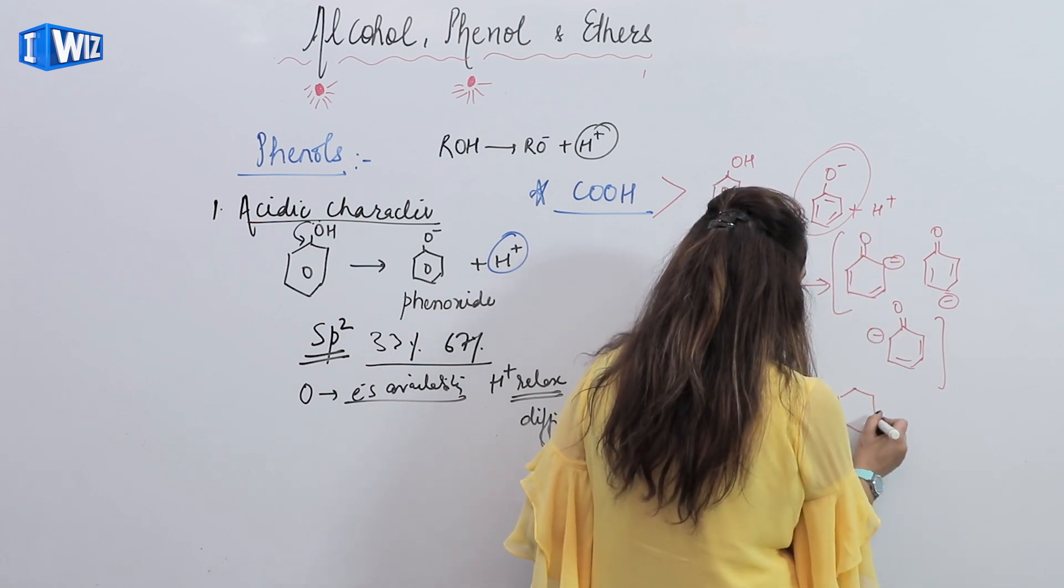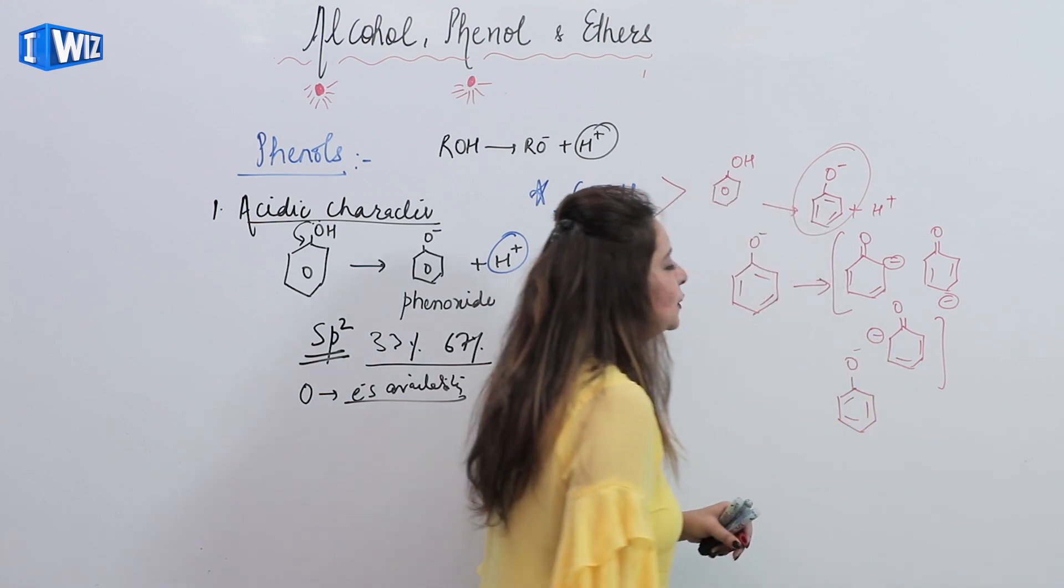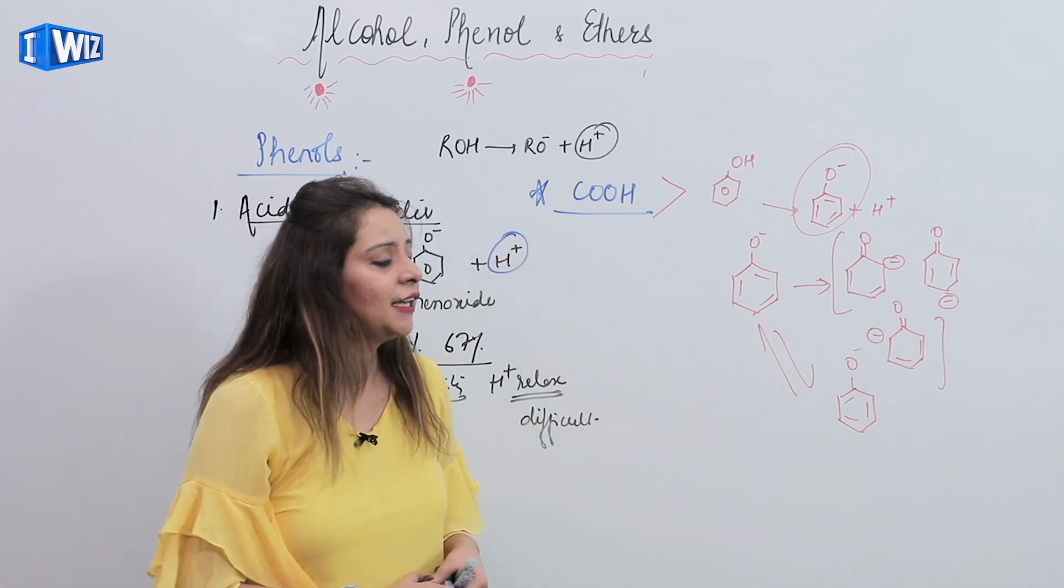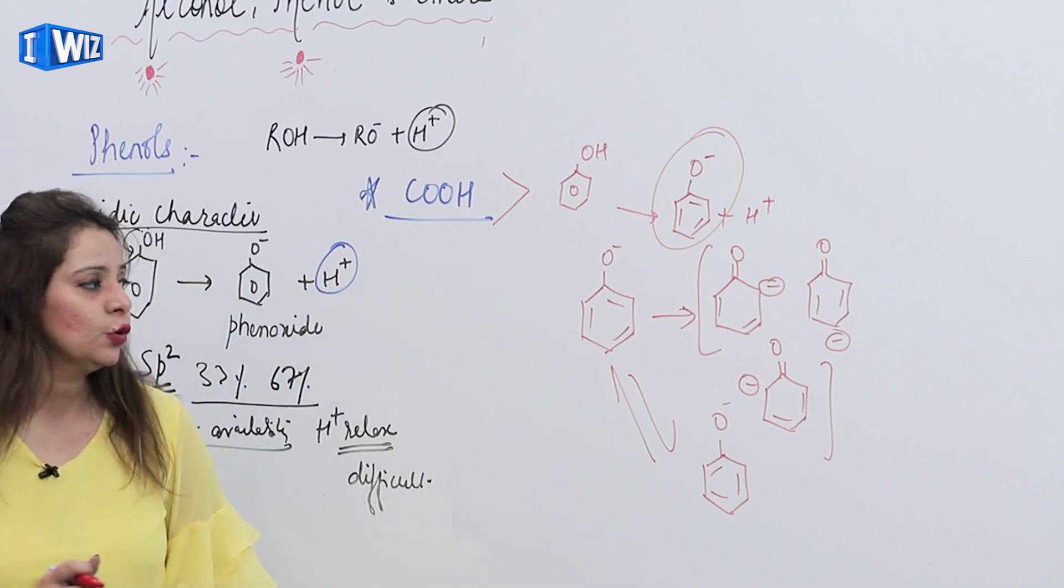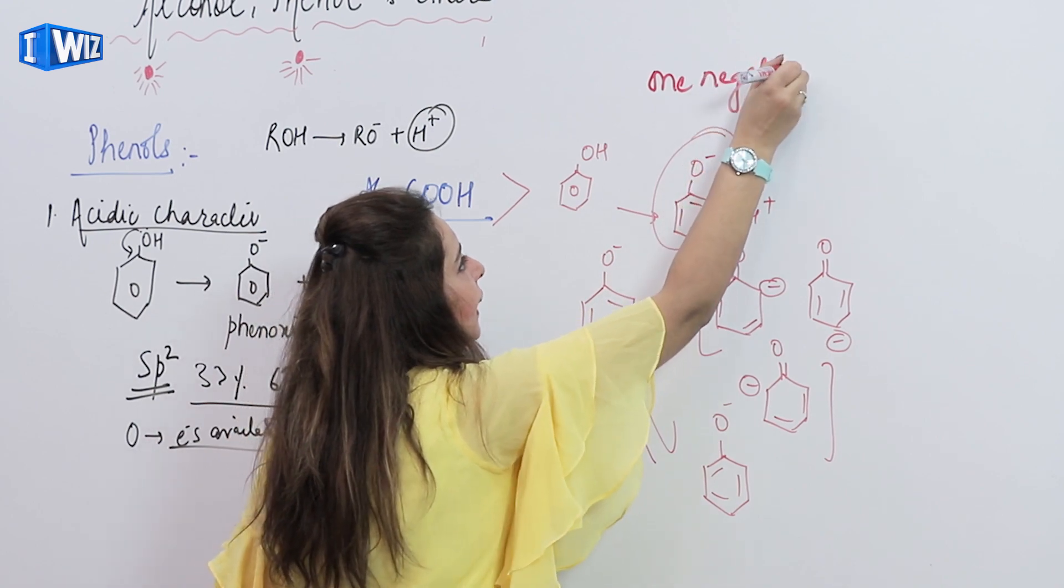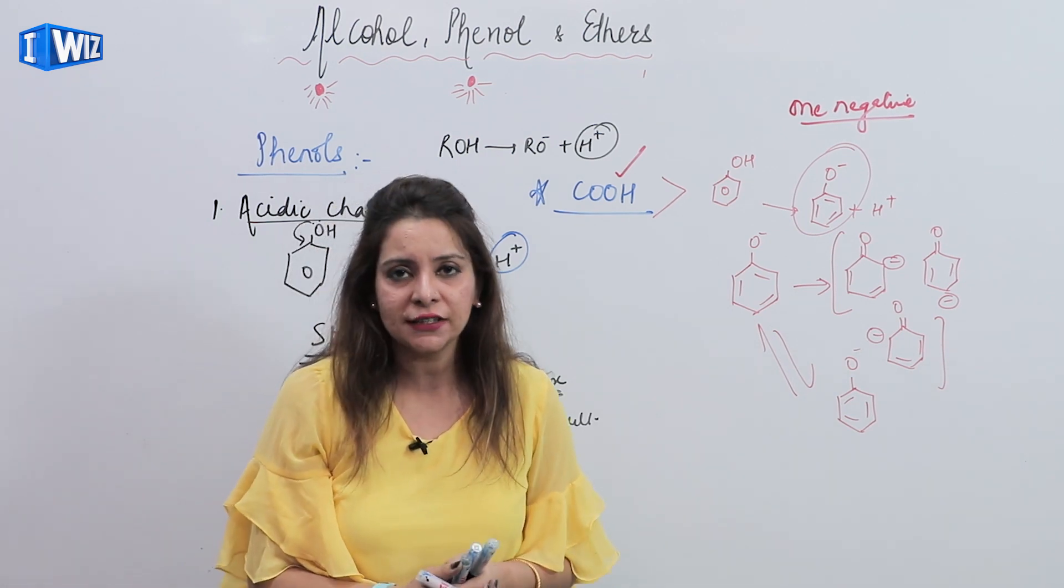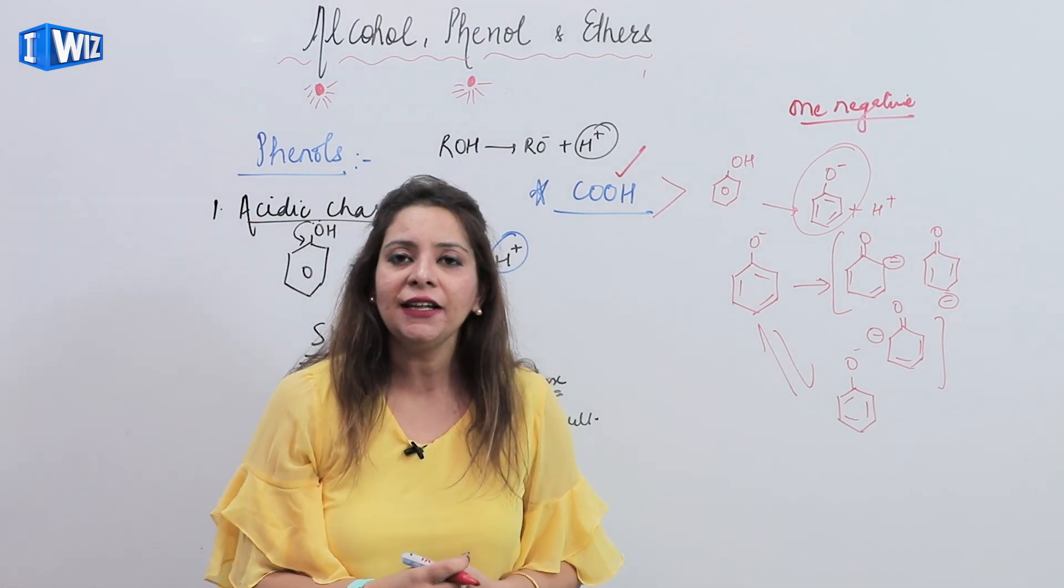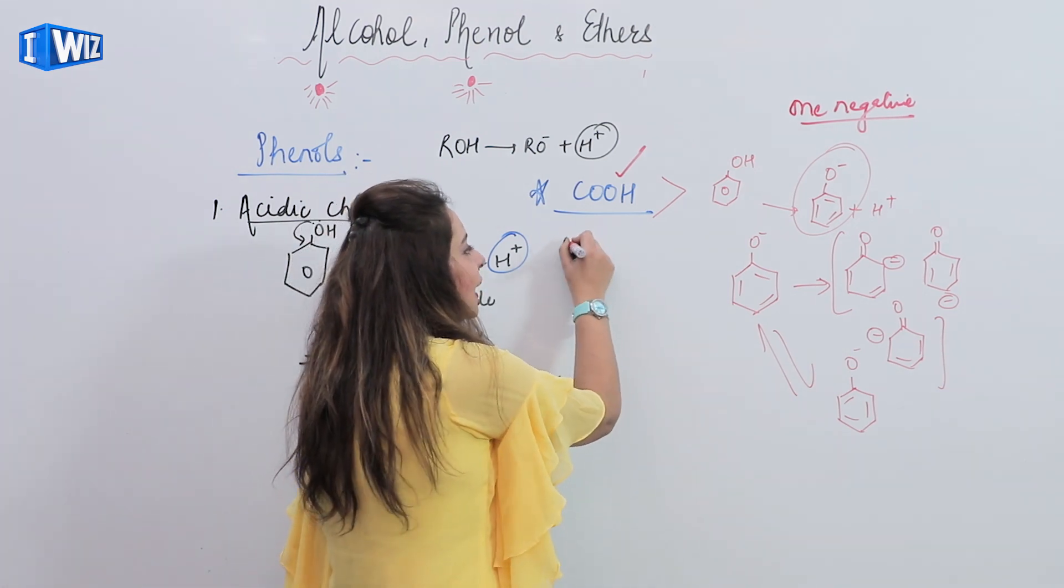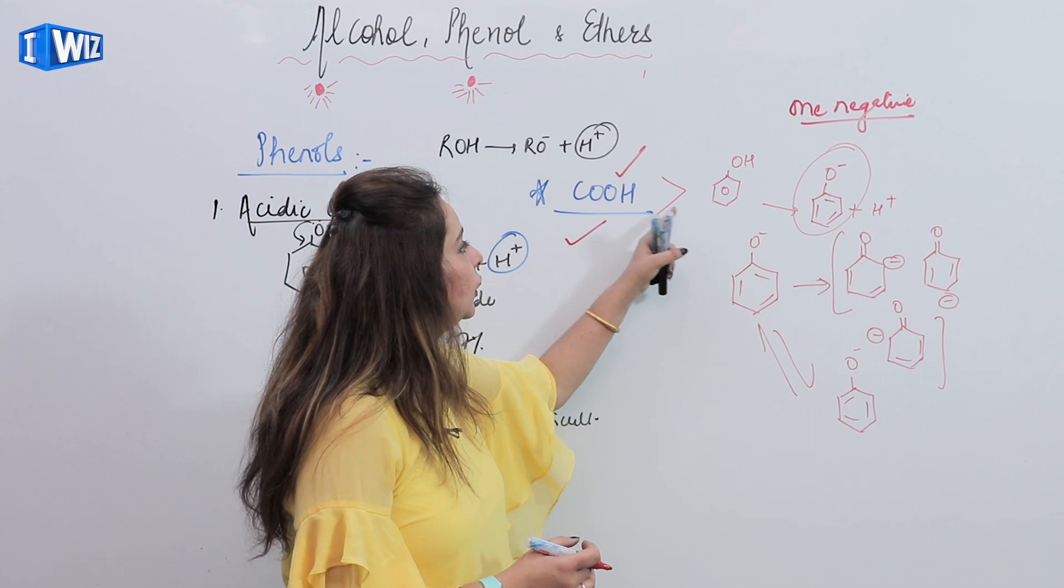If we make its resonating structures here, then what will happen? This negative charge will get dispersed in this manner - this bond will become double, and the charge gets dispersed at different positions. These are its resonating structures. This means the stabilization of phenoxide ion can be explained on the basis of resonance. Here the charge being dispersed is one negative charge only. But here there are two oxygens and both oxygens have two negative charges, meaning each oxygen has one negative charge. Since the charge here is dispersing more, carboxylic acid is more acidic as compared to phenol.